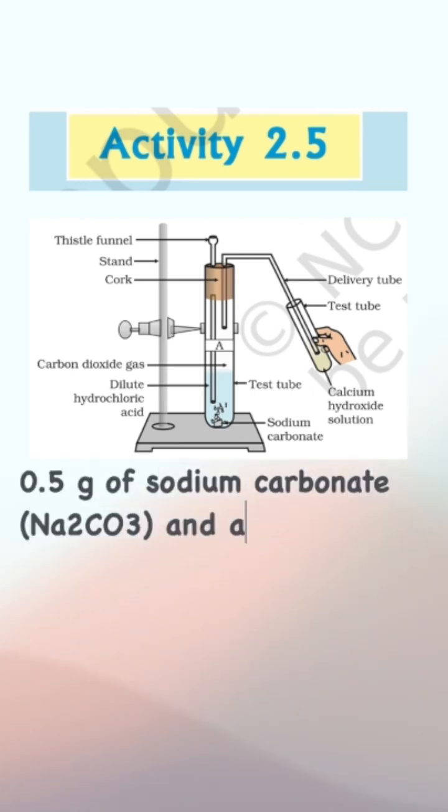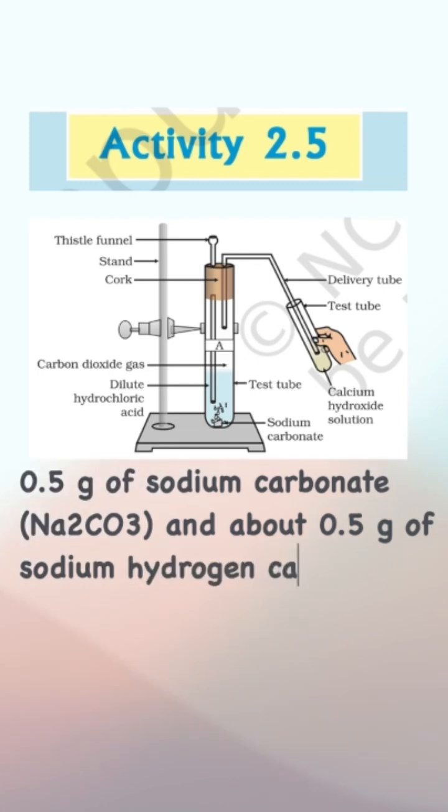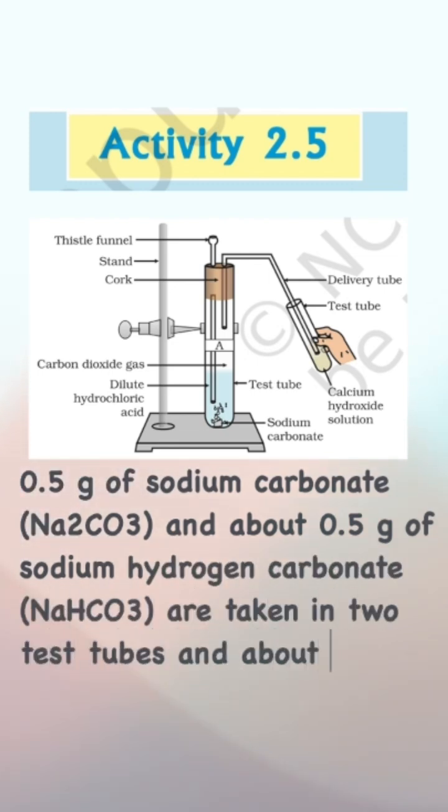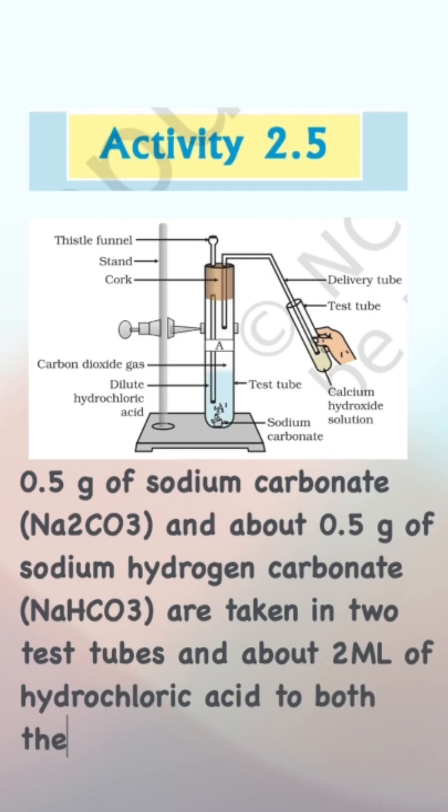0.5 grams of sodium carbonate and 0.5 grams of sodium hydrogen carbonate are taken in two test tubes. Then about 2 milliliters of hydrochloric acid is added to both test tubes.